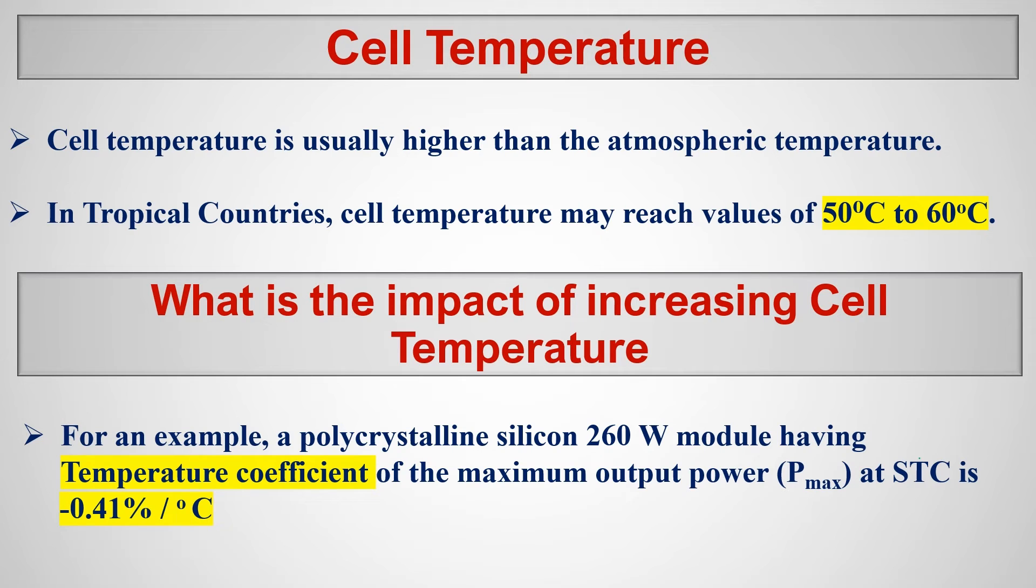So you are getting 1000 watts per meter square solar radiation, but the temperature is 40 degrees, then the panel efficiency goes down. Let's take the impact of increases of cell temperature. For example, a polycrystalline silicon 260 watt module has temperature coefficient of maximum output power Pmax at standard test condition of minus 0.41% per degree Celsius.